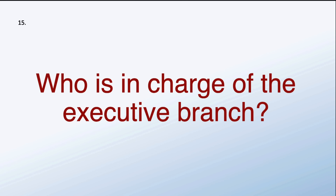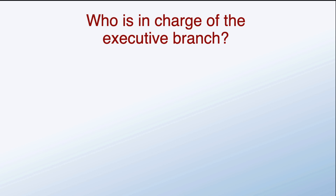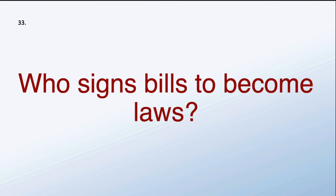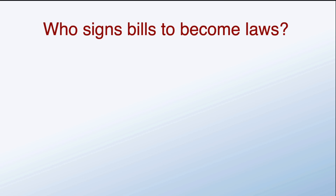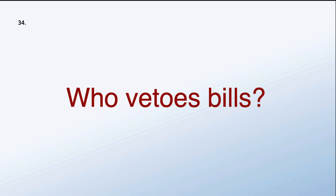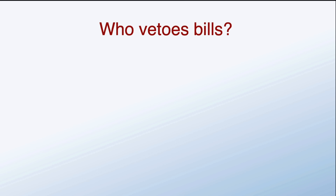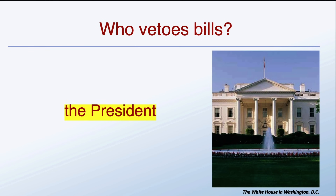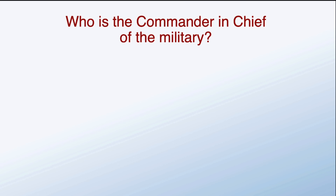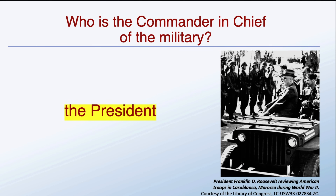Who is in charge of the executive branch? The president. The president is in charge of the executive branch. Who signs bills to become laws? Who vetoes bills? The president. The president is also commander-in-chief of the military.